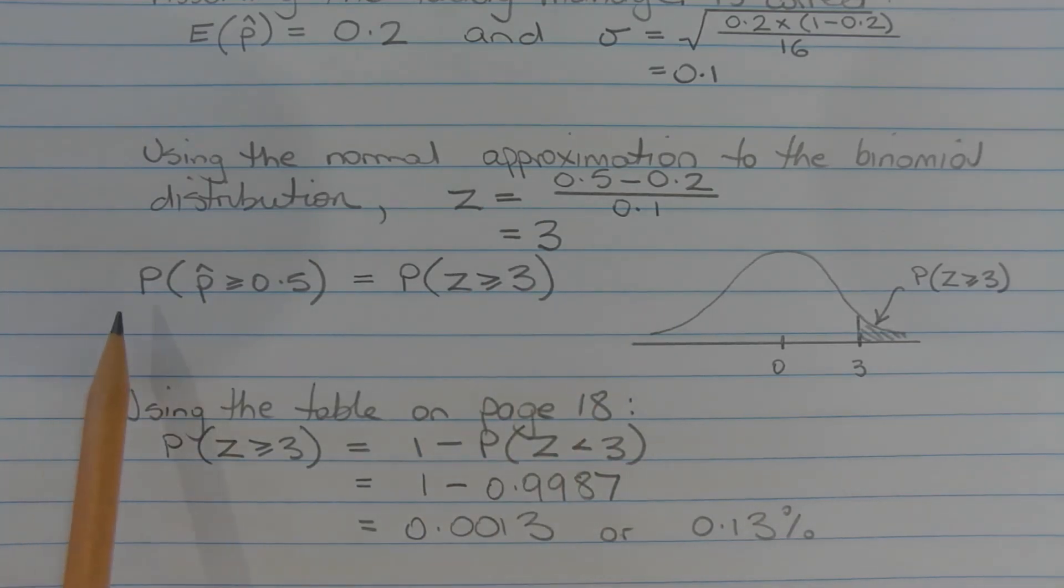So the probability that P hat is greater than or equal to 0.5 is equal to the probability that z is greater than or equal to 3. And on the normal distribution, it corresponds to this area here.